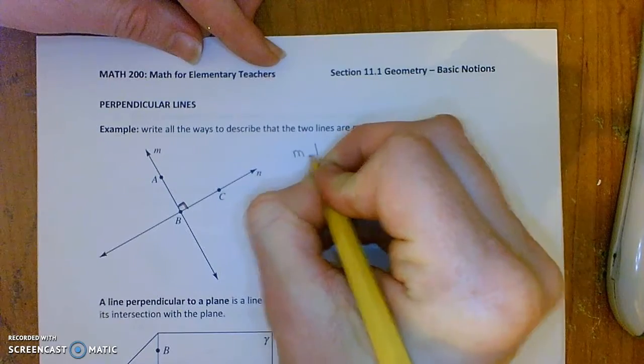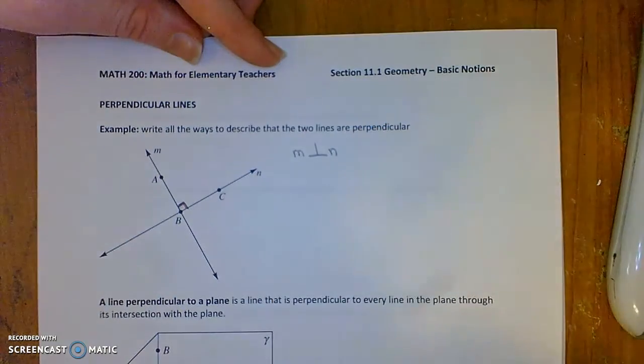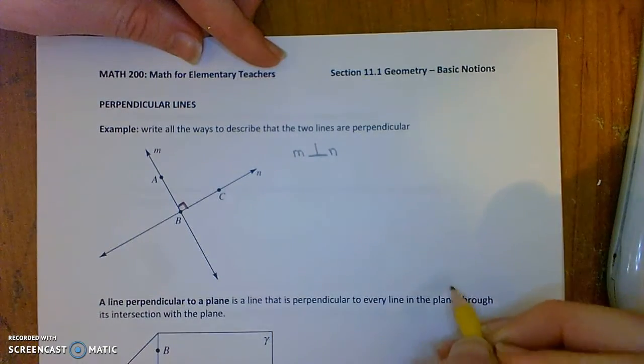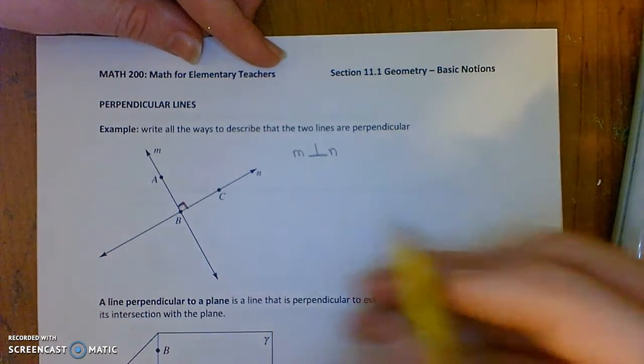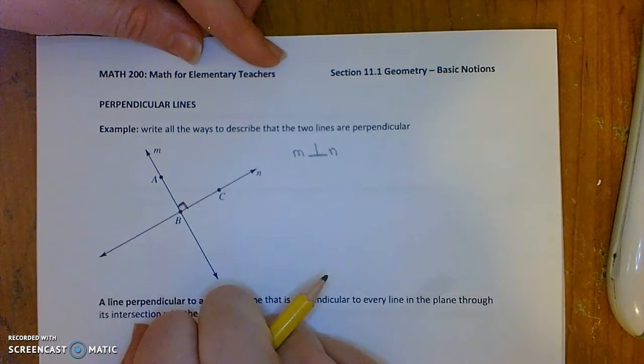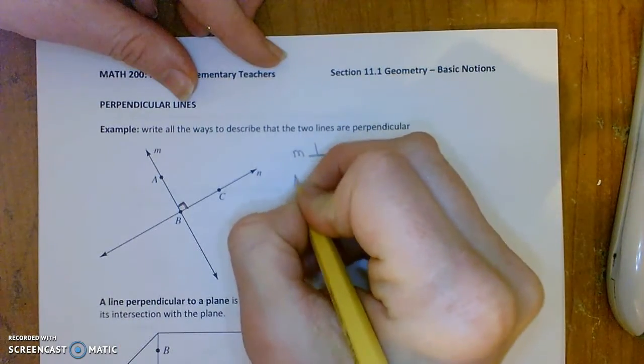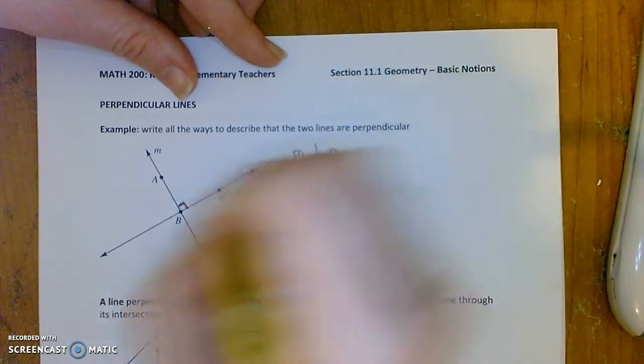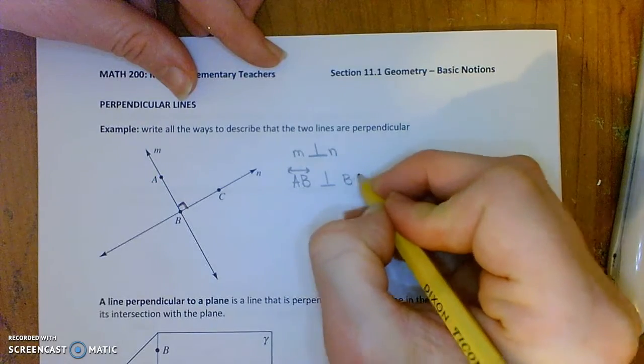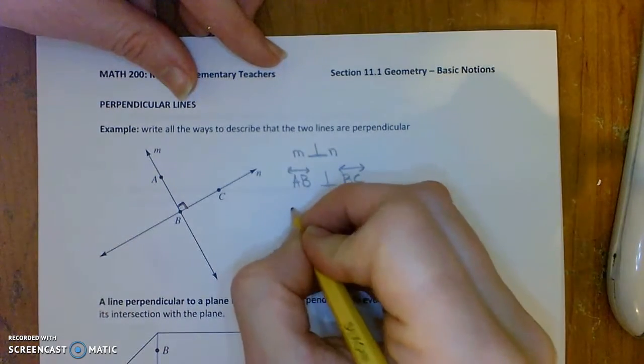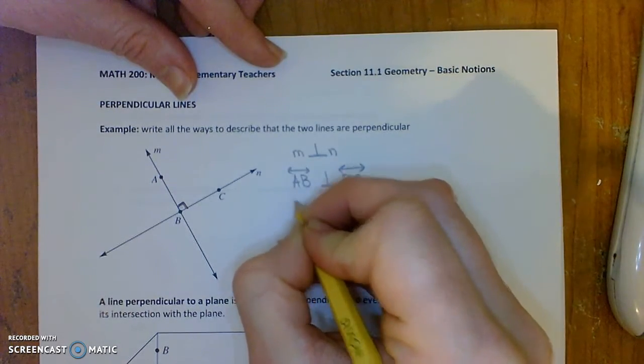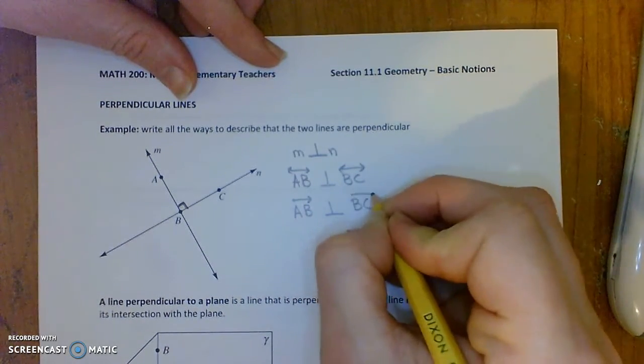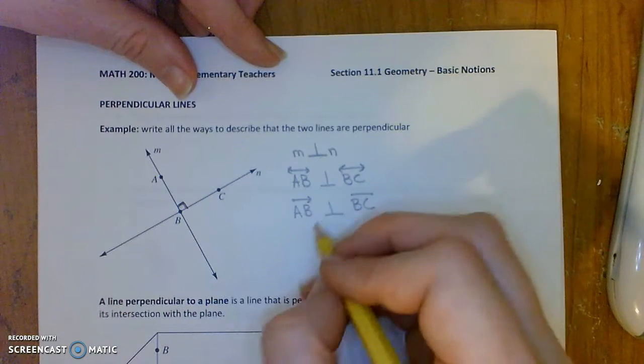So there's some ways we can say that in this picture that the lines are perpendicular. You can say M is perpendicular to N. And this is the symbol that we use for perpendicular. We sort of draw in two intersecting segments there that are perpendicular. You can say that the line AB is perpendicular to the line BC. You can also say that like a ray could be perpendicular to a segment if you like.